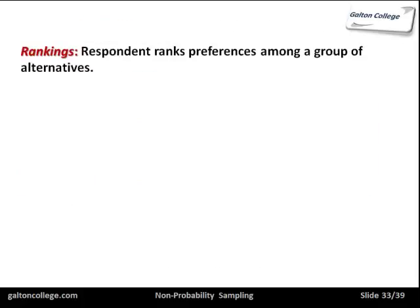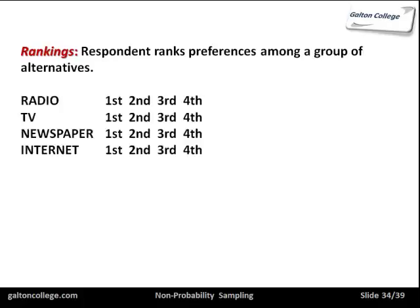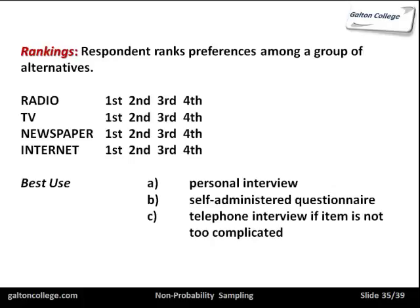Rankings: the respondent ranks preferences amongst a group of alternatives. So the question might be: which do you prefer — radio, television, newspaper, or the internet? You might say radio first, television second, internet third, newspaper fourth, or whatever your preference is. You simply circle the first preference, second preference, and so on. Rankings are useful for personal interviews and for self-administered questionnaires.